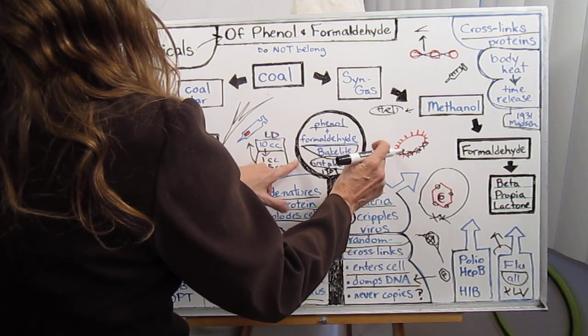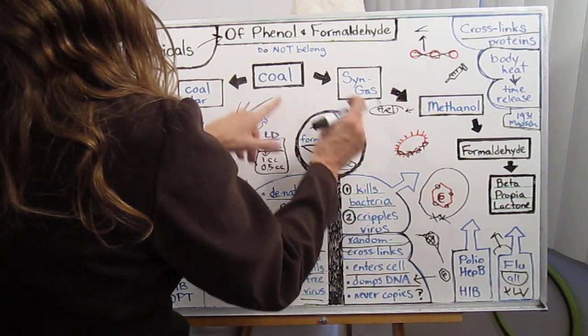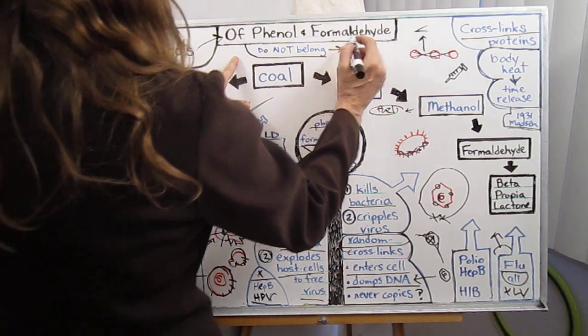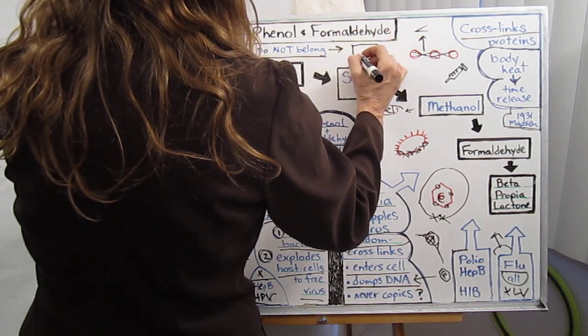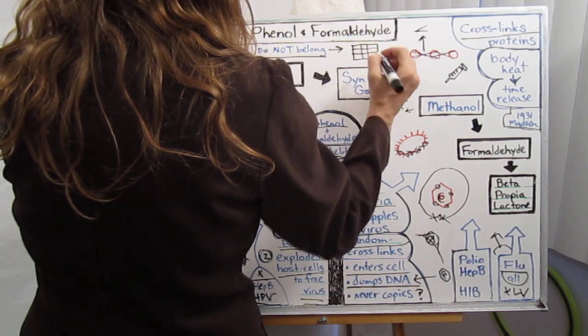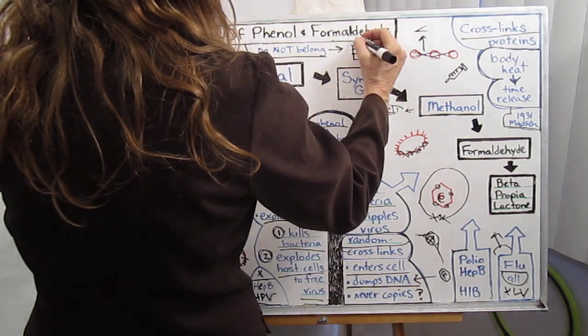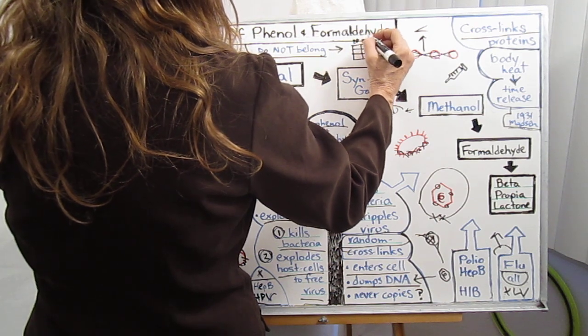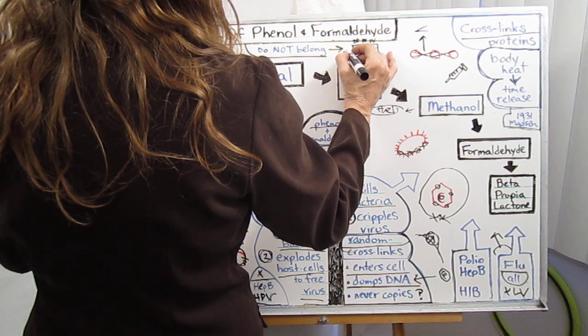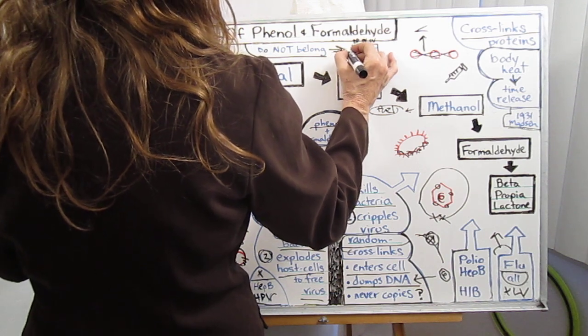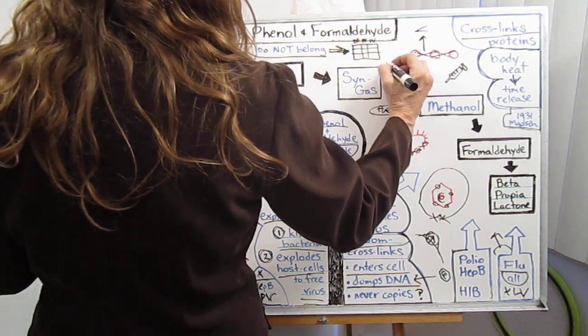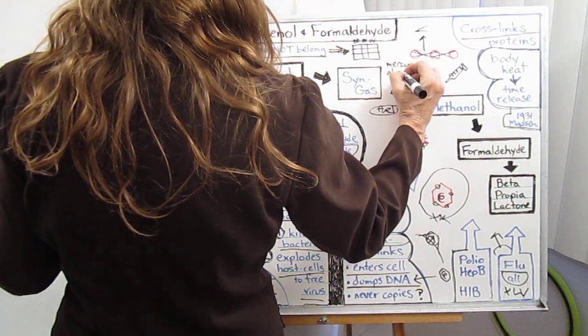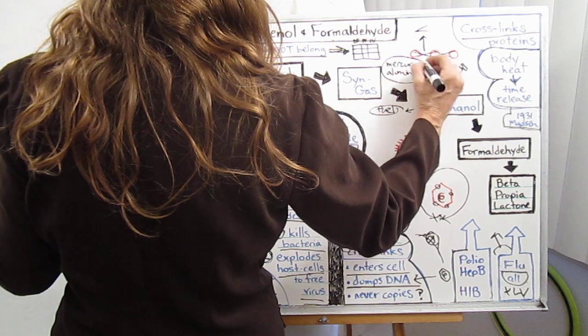Very interesting. These chemicals do not belong in the body. That is why they are in my graph. I have the vaccine tic-tac-toe with the three main categories of microbes that they're using. And I have a category for the chemicals. And they are listed there, including mercury and including aluminum, because they do not belong in the body.